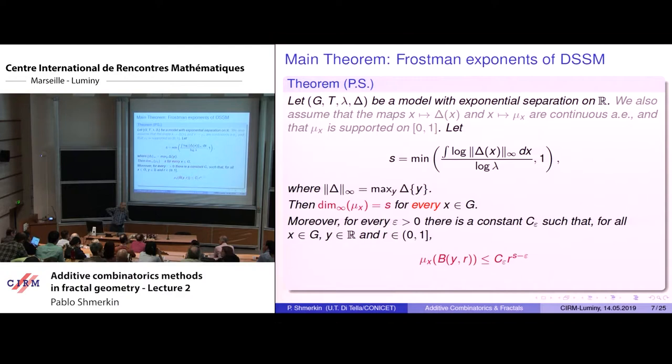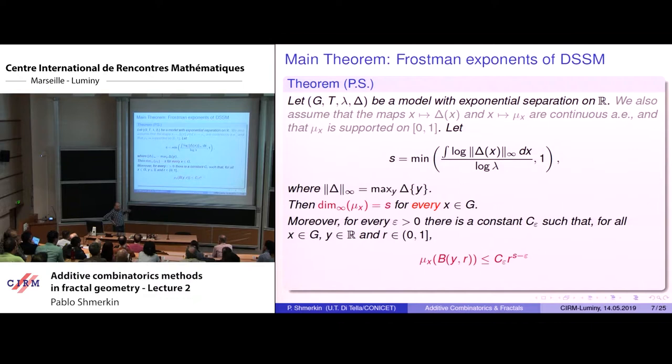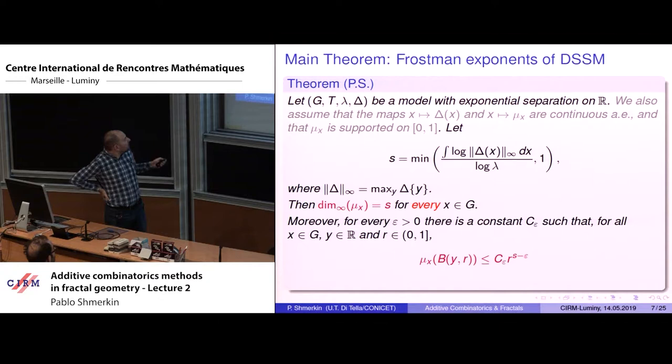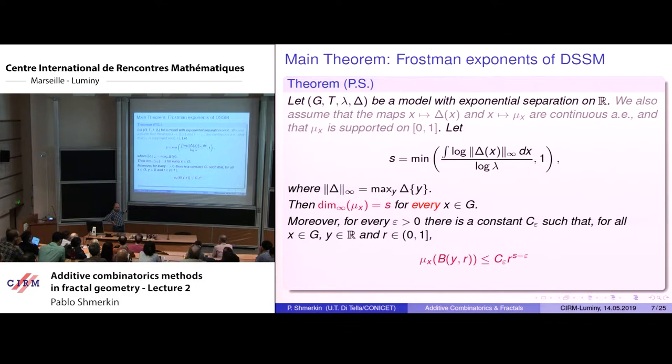Q: What is the difference between delta(x)(y) and the notation used? A: x is an element of the group, delta(x) is an atomic measure that depends on x, and delta(x)(y) is the mass of delta(x) at the atom y. The L-infinity norm of delta(x) is the mass of the largest atom. Q: The L-infinity dimension of a measure is always smaller or equal to Hausdorff dimension, and very often strictly smaller.